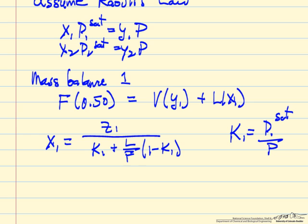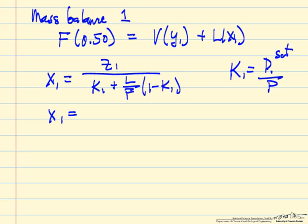Z1 is 0.5. So we can calculate x1 directly in this case, and this really results from just solving Raoult's law and mass balances.